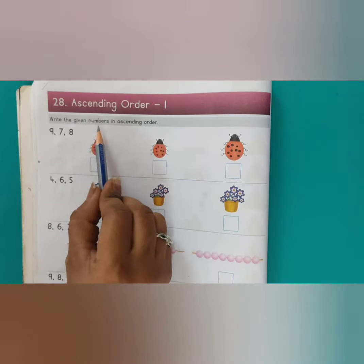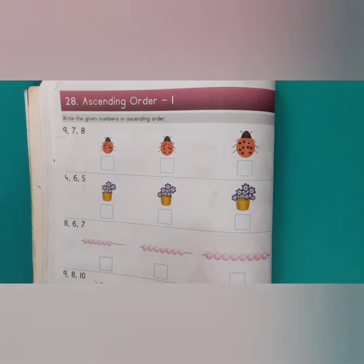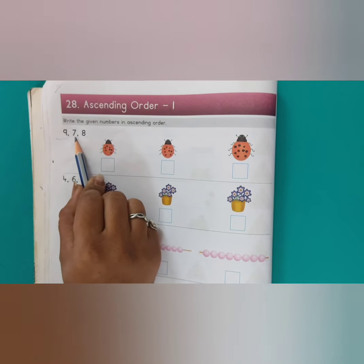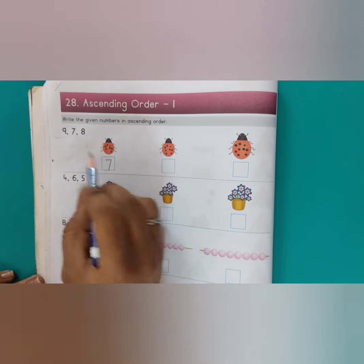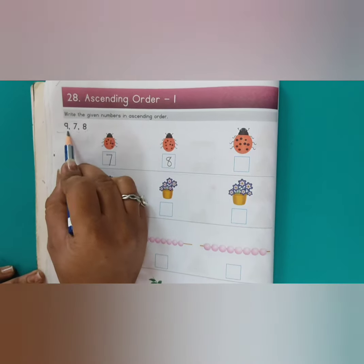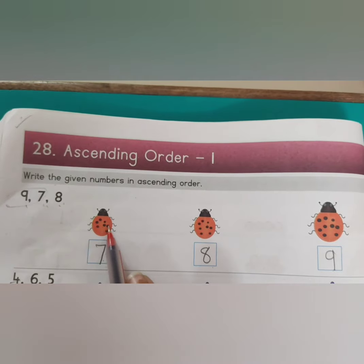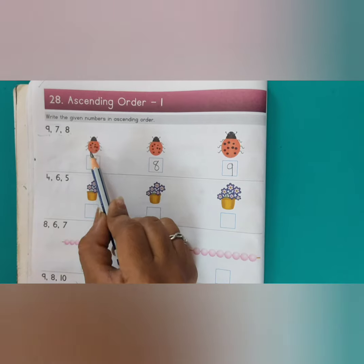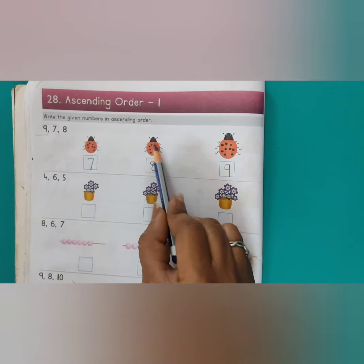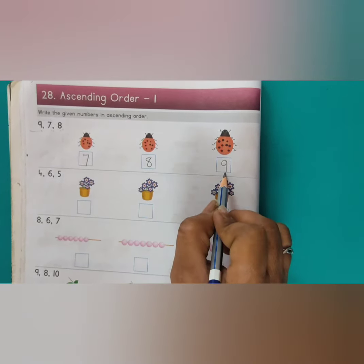पर आगे आपको only numbers देखके करना है. Ascending order means क्या होता है? Small to big. तो यहाँ पर 9, 7, 8 दिया है ना. तो सबसे छोटा number कौन सा है? 7. तो आप क्या लिखेंगे? 7. उसके बाद कौन सा नमबर आता है? 8. और उसके बाद big number — 8 के बाद कौन सा नमबर आता है? 9. यह आप counting करके भी कर सकते हो — 1, 2, 3, 4, 5, 6, 7 — तो यहाँ पर हमने 7 लिखा. फिर 8 dots है, इसलिए 8 लिखा. और 9 dots है, तो 9 आएगा.